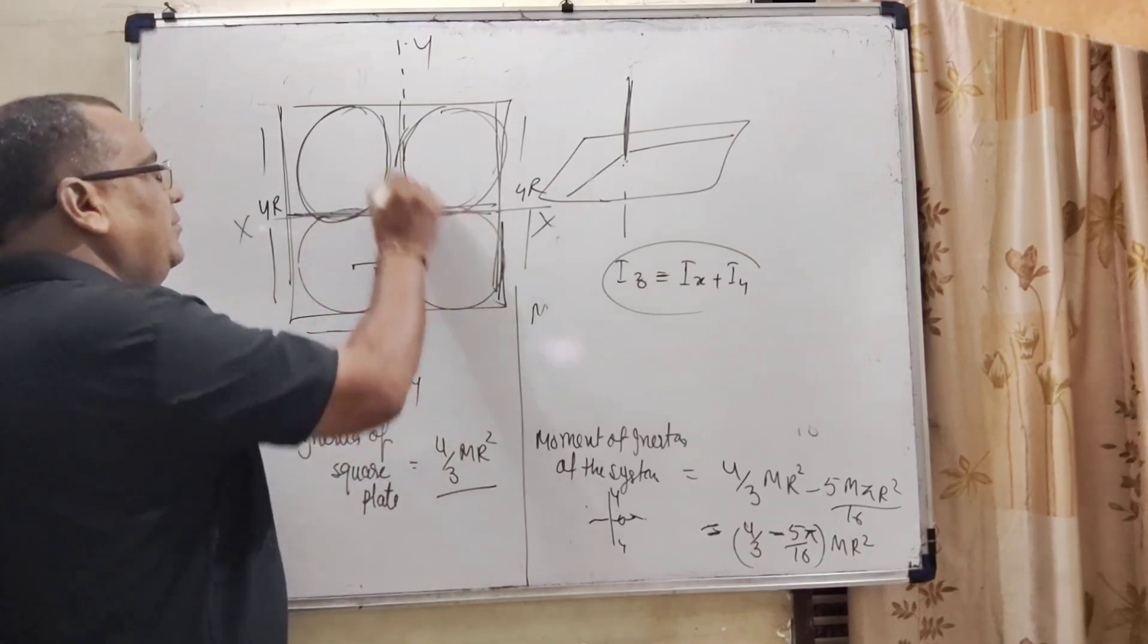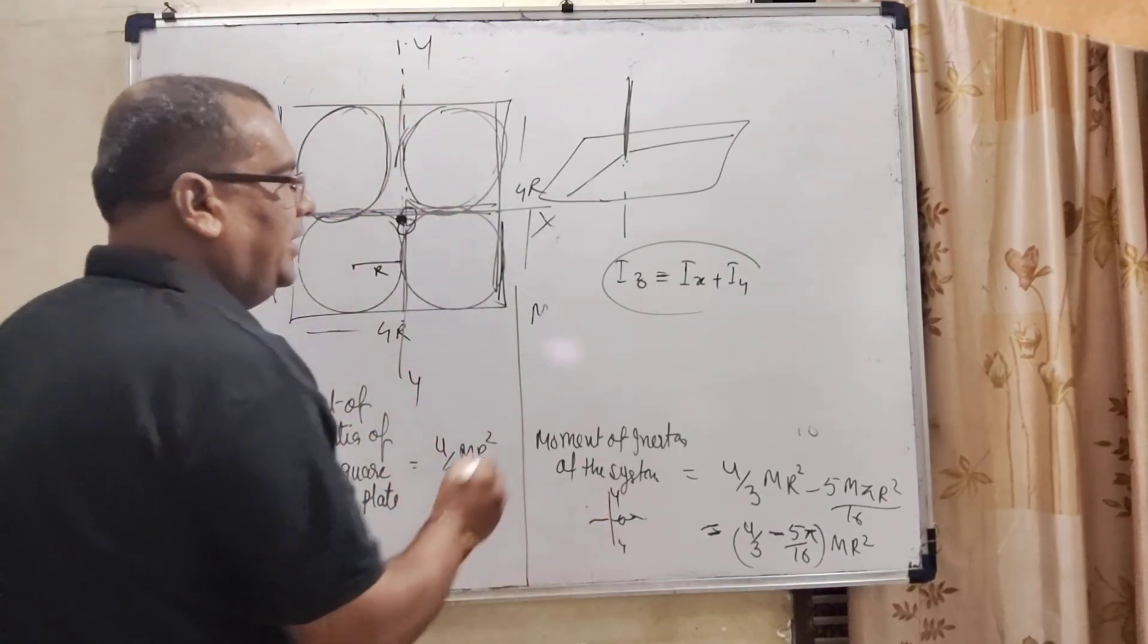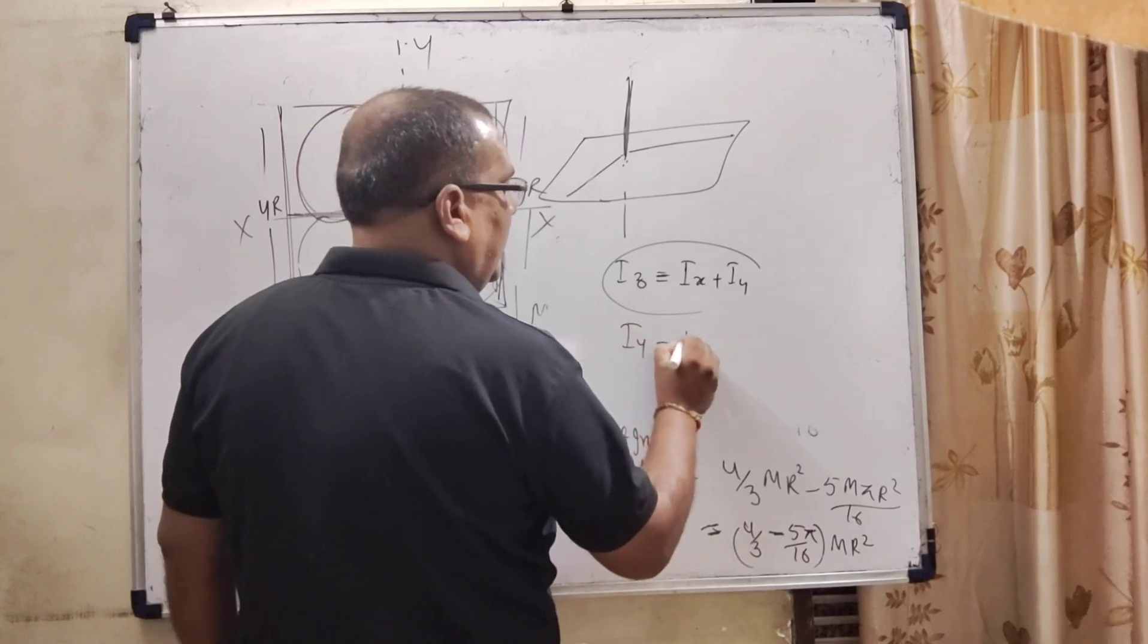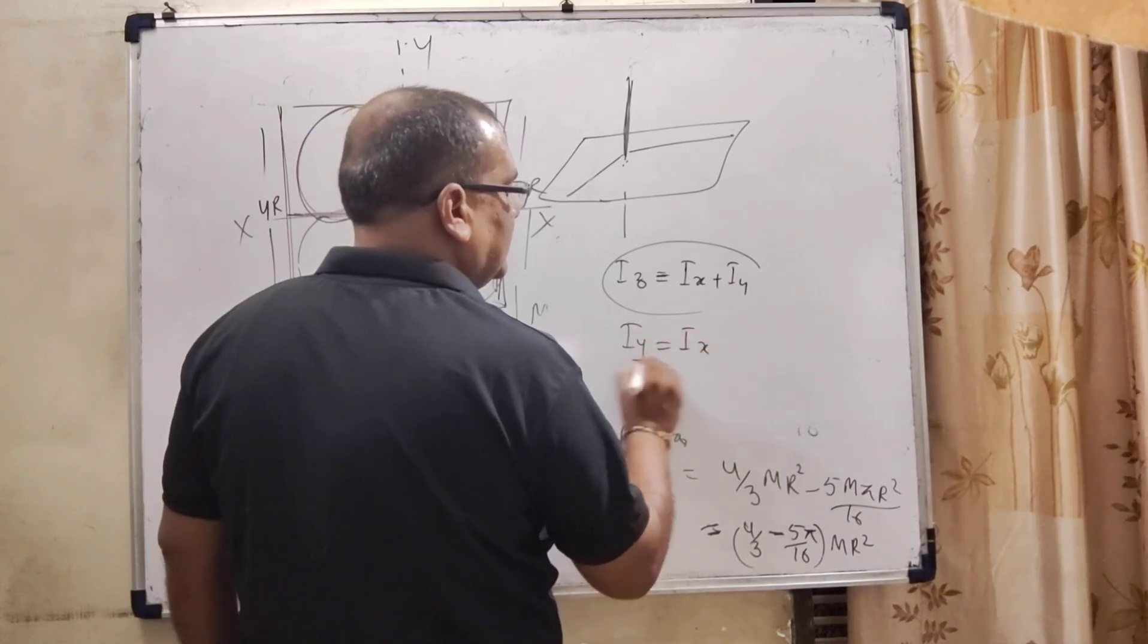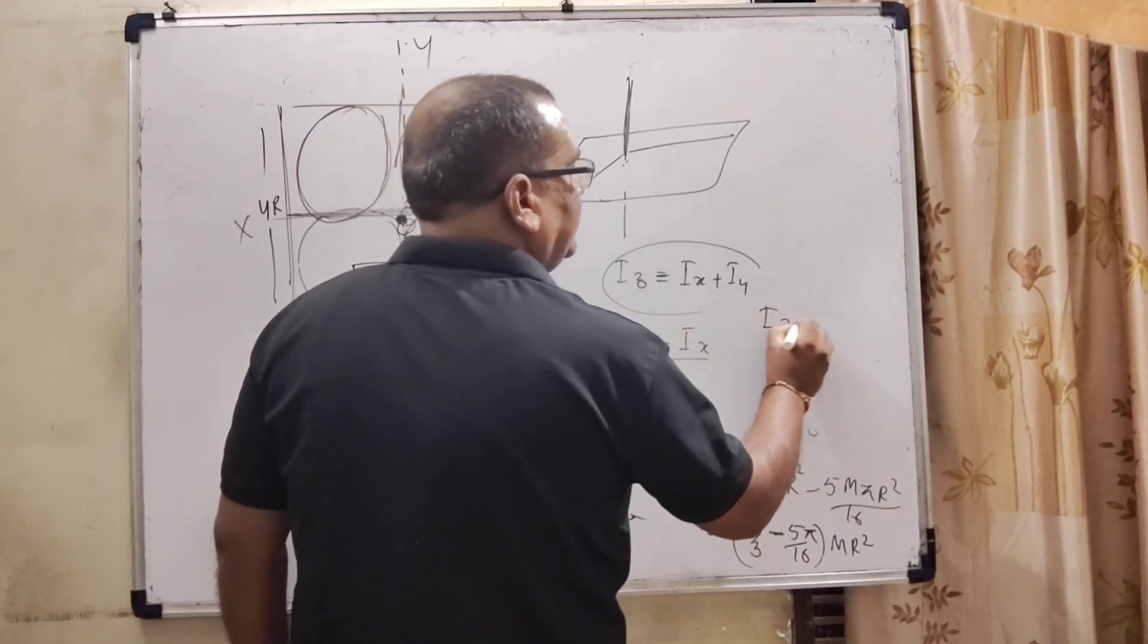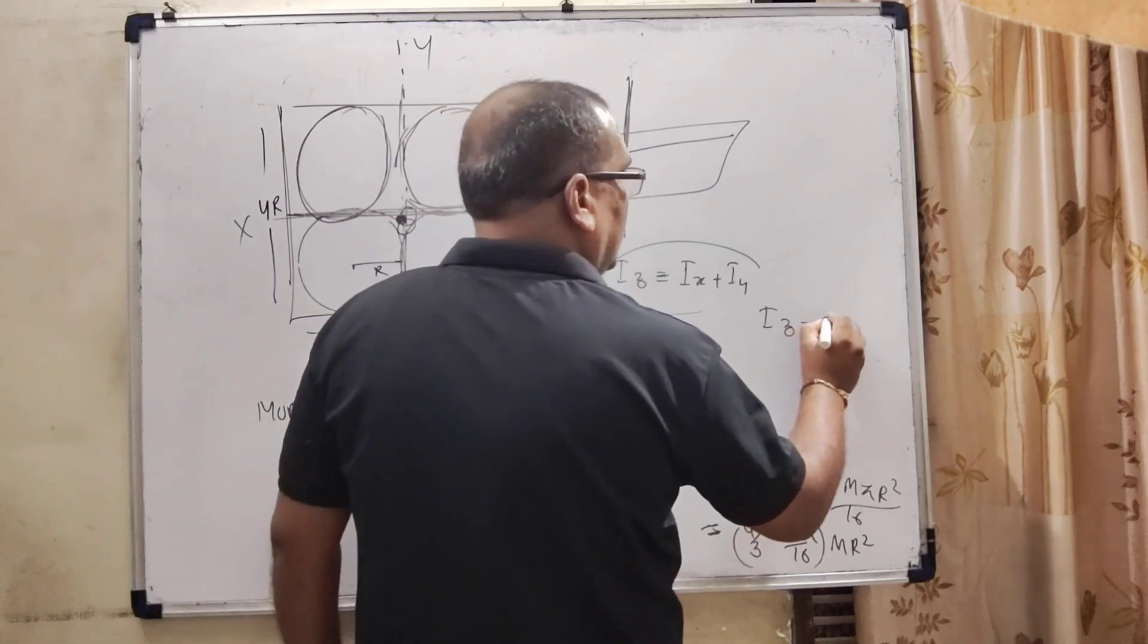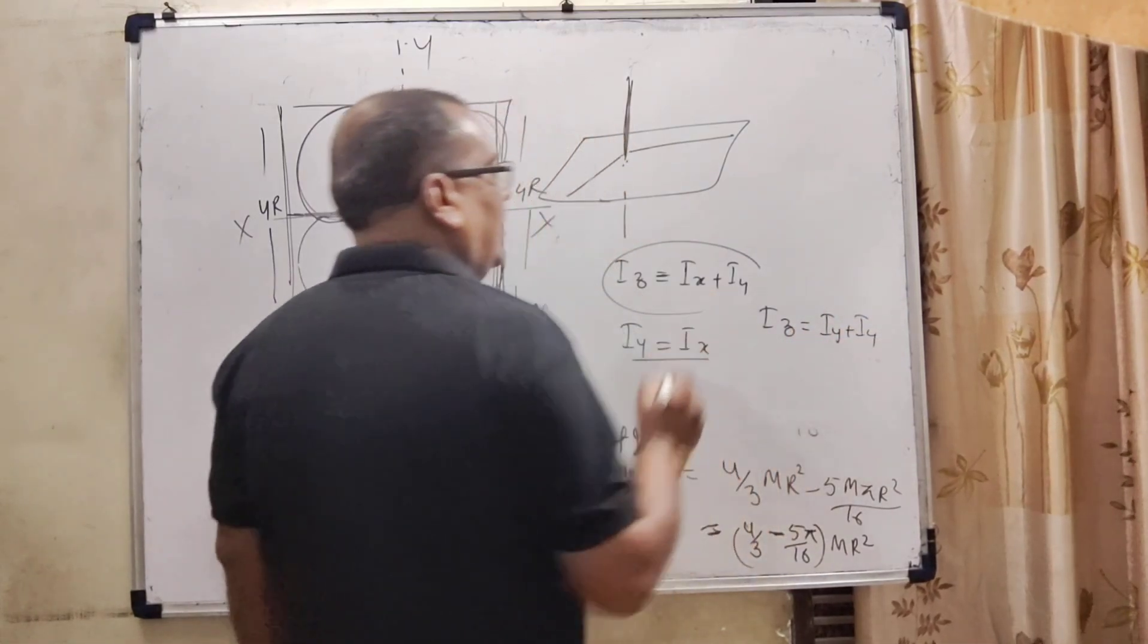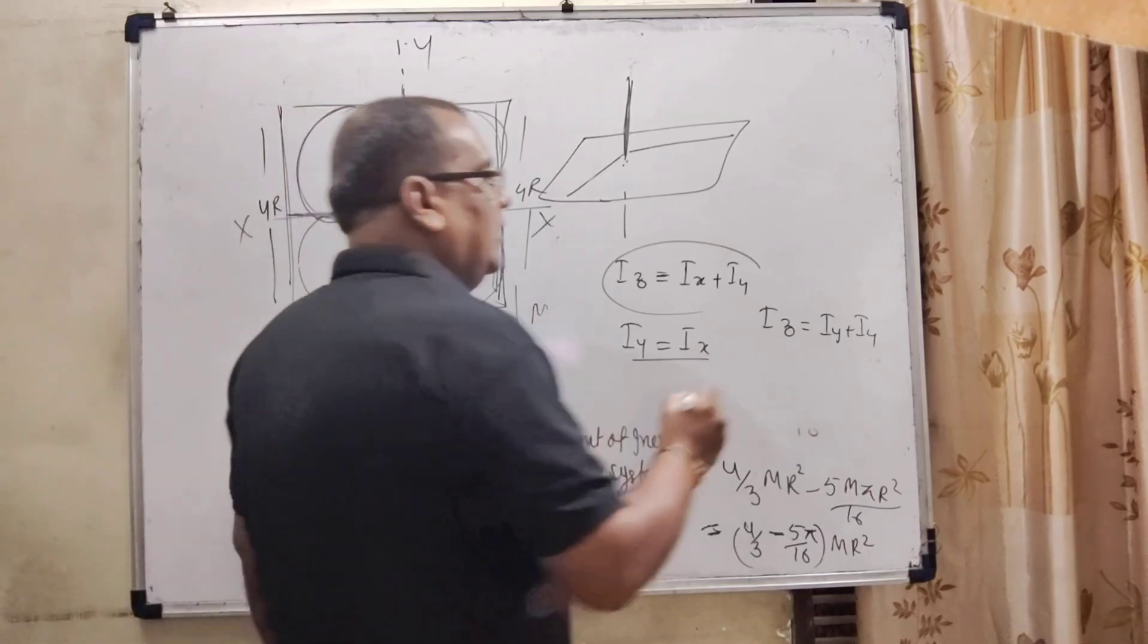Here, this diagram is symmetrical, so we already found Y axis moment of inertia. Iy equals Ix. So Iz equals Iy plus Iy. In place of Ix we substitute Iy.